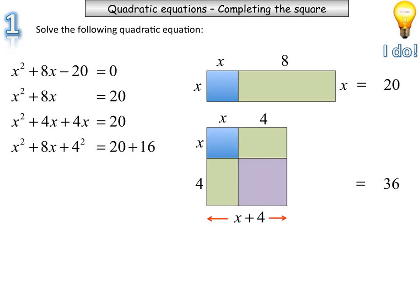The dimensions of this new square are x plus 4 units by x plus 4 units. That's why I'll represent that in a different way. x plus 4 multiplied by x plus 4. x plus 4 multiplied by x plus 4 is x plus 4 squared. So x plus 4 squared is equal to 36.